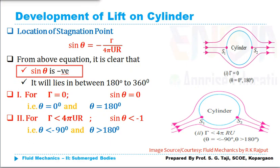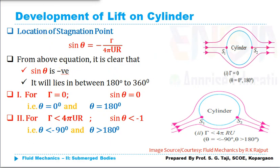From this equation we can see that sin(θ) is negative, meaning all stagnation points will be located below the horizontal axis of the cylinder. Since sin(θ) is negative for θ between 180° and 360°, our stagnation points will be located in the lower portion only, within the range of 180° to 360°. Let us now consider the individual cases.